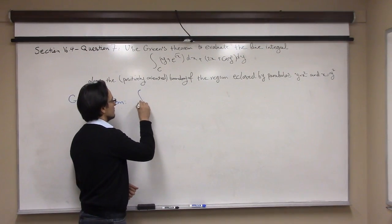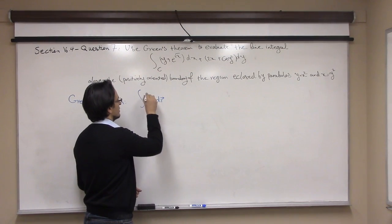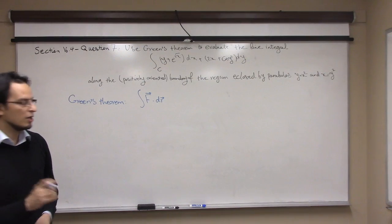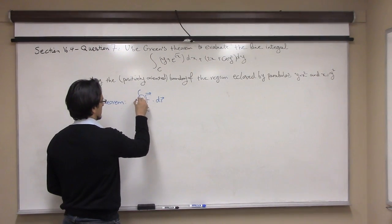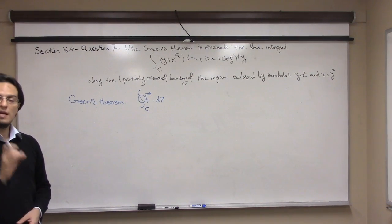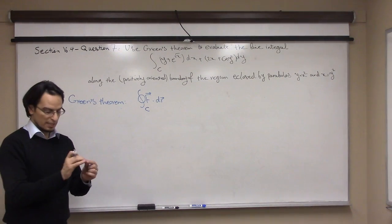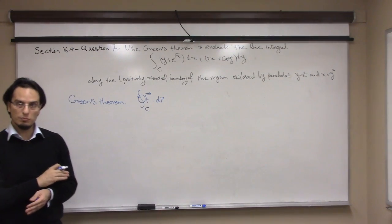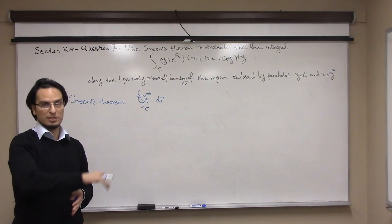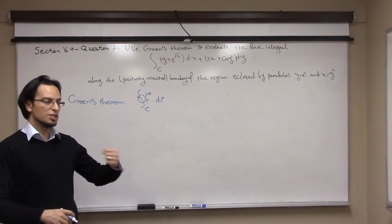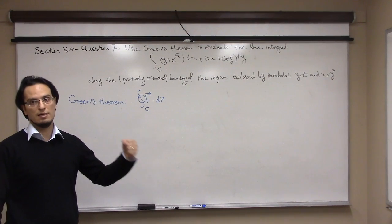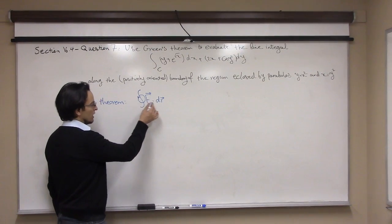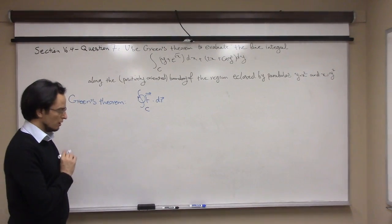Green's theorem says that if you have a vector field and you want to find the line integral along a curve, first it must be closed, second it must be simple — meaning it does not intersect itself — and third it must be positively oriented, meaning that as you move along the curve, the region inside always stays to your left.